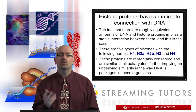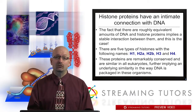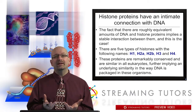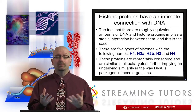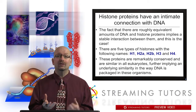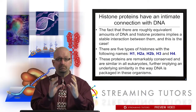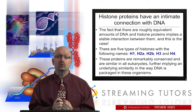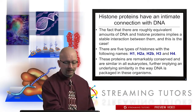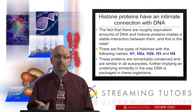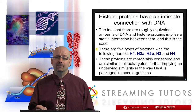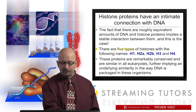Histone proteins in eukaryotes have a very intimate connection with DNA. There are roughly equivalent amounts of DNA and histone proteins by weight, which certainly implies some kind of stable piece-by-piece interaction between them. There are five types of histone proteins — they're all named H and then a number: H1, H2A, H2B, H3, and H4.